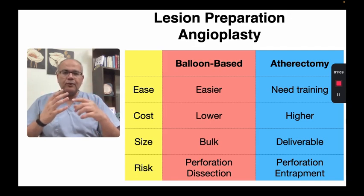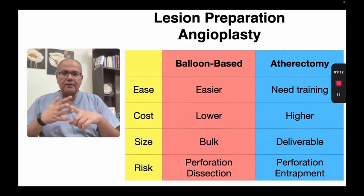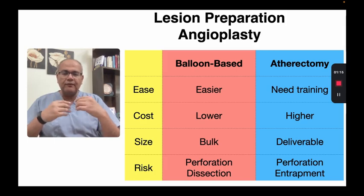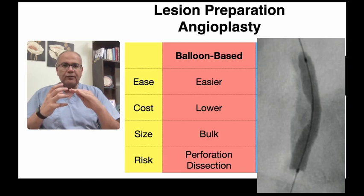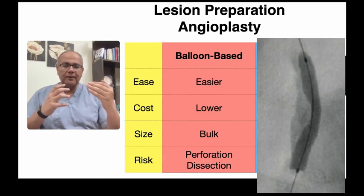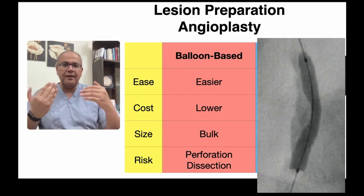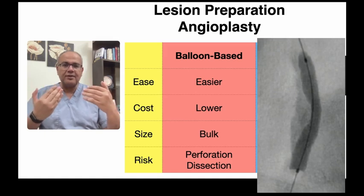Balloons are easier, they are more commonly used, they are cheaper, but they have the problem of lesion crossing. The other issue with balloons is that the force may be exerted more on the soft part of the vessel rather than the hard calcified part, and this can increase the chances of dissection and perforation.